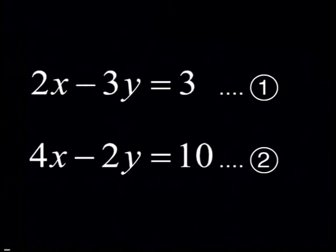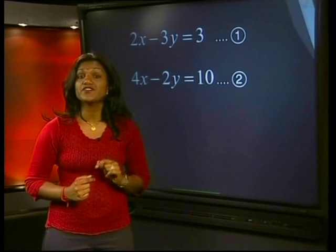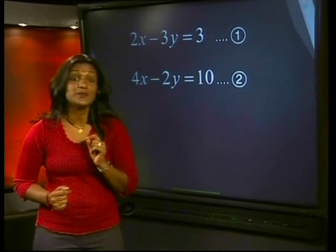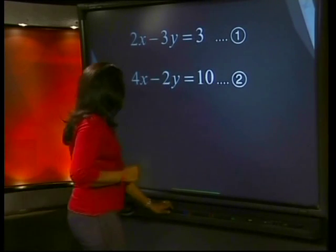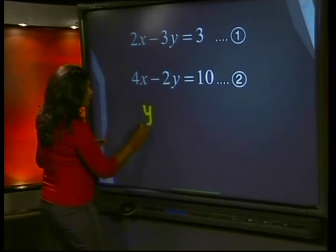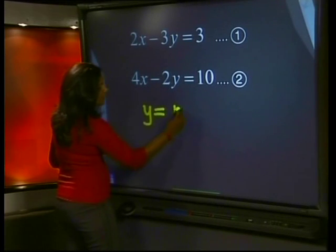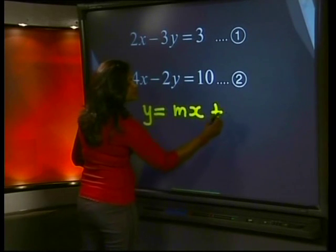We need to find those values of x and y that satisfy both these equations. We named them equation 1 and equation 2. We are going to draw the graphs of these equations. It will help us to rewrite each of these equations in the form y is equal to mx plus c.